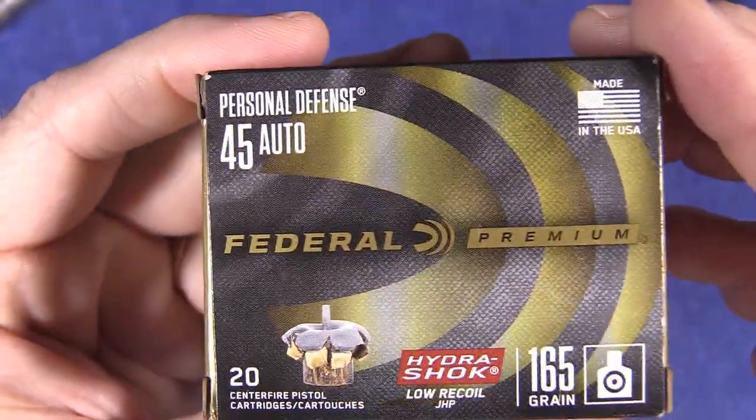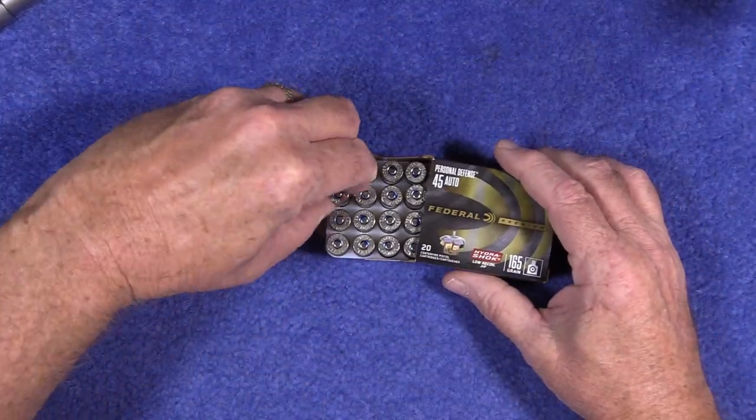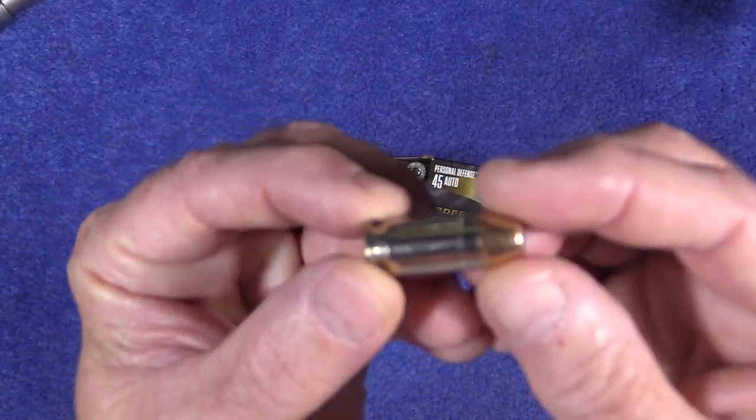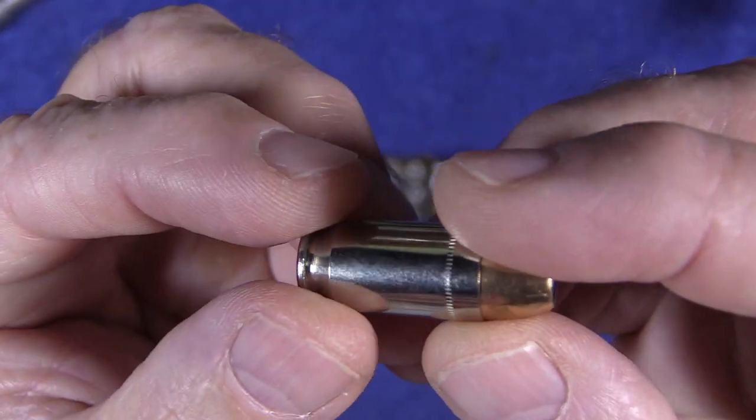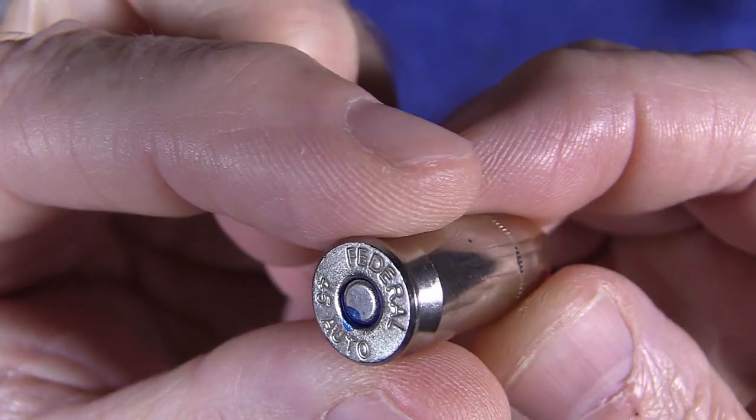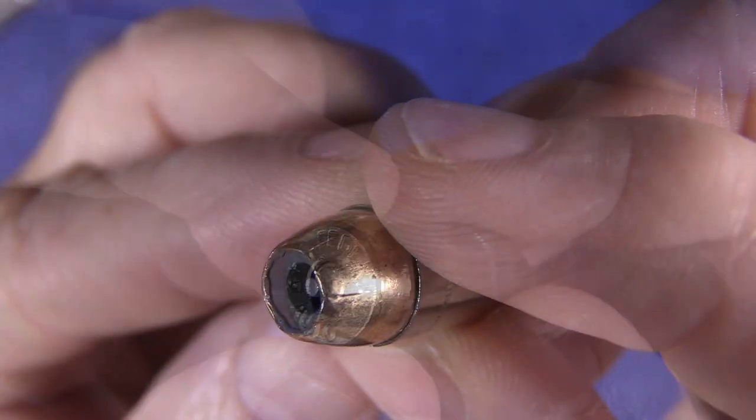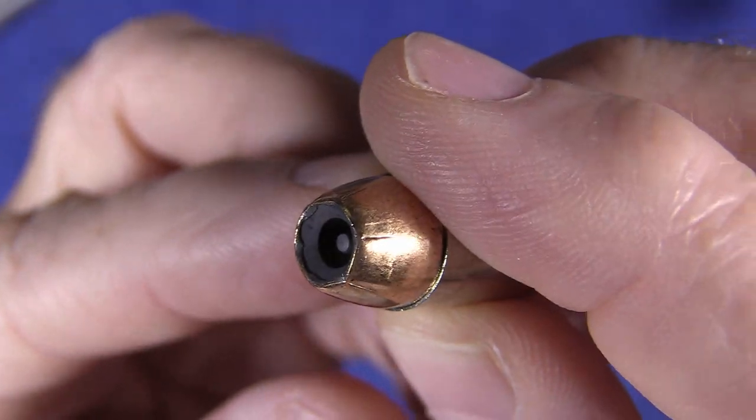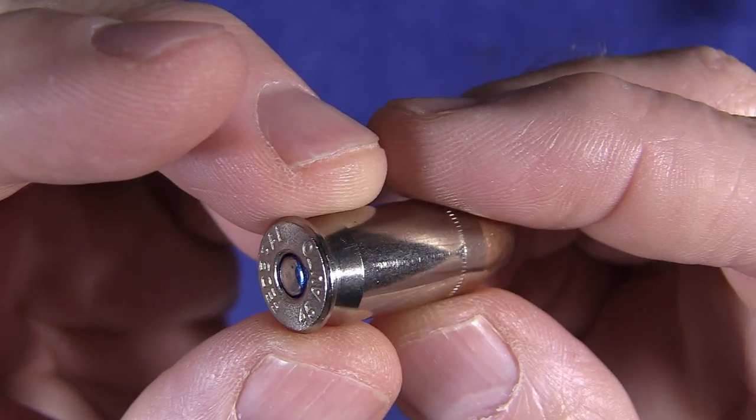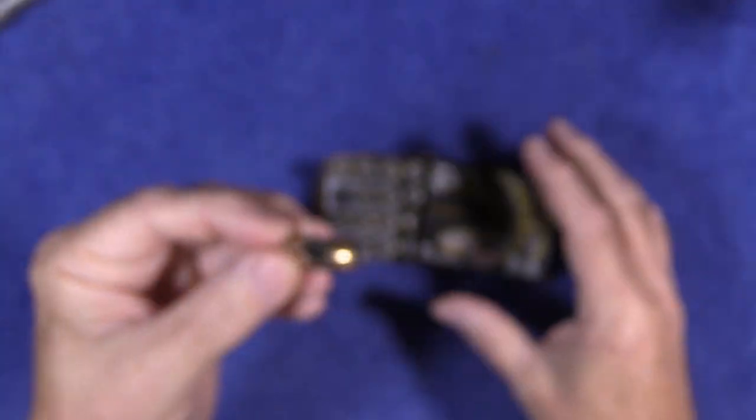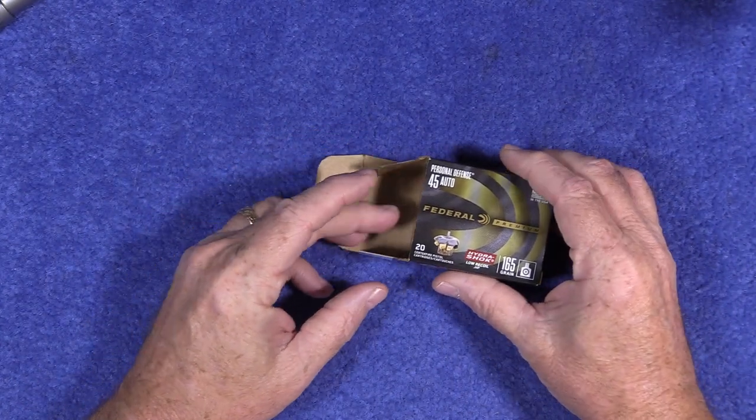All right, let's open this up and see what we have. Nickel plated case, Federal 45 auto. Boy, I love these big fat bullets. And as you can see, there's 20 rounds to a box. So let me show you the gun we're going to shoot today.